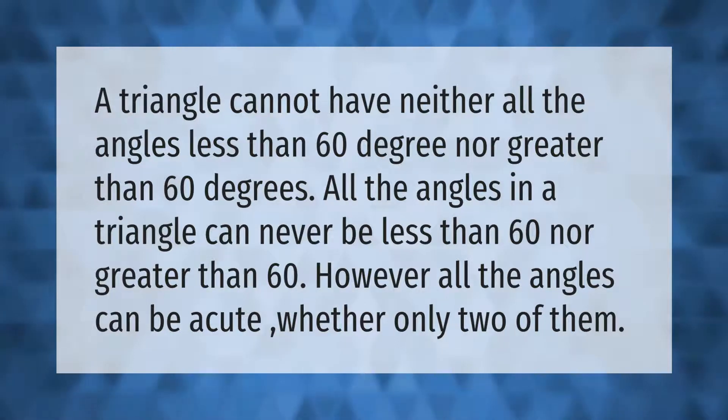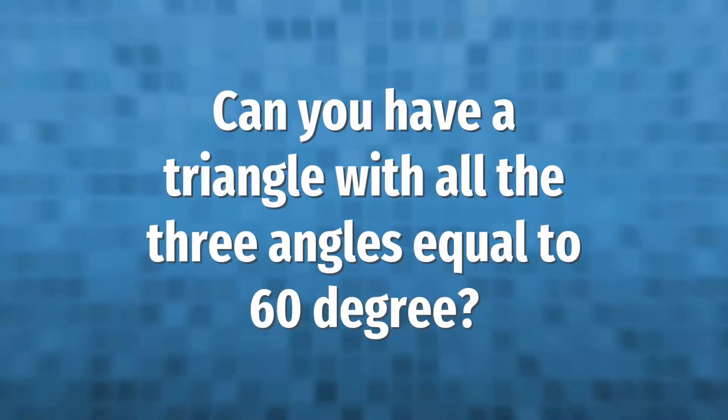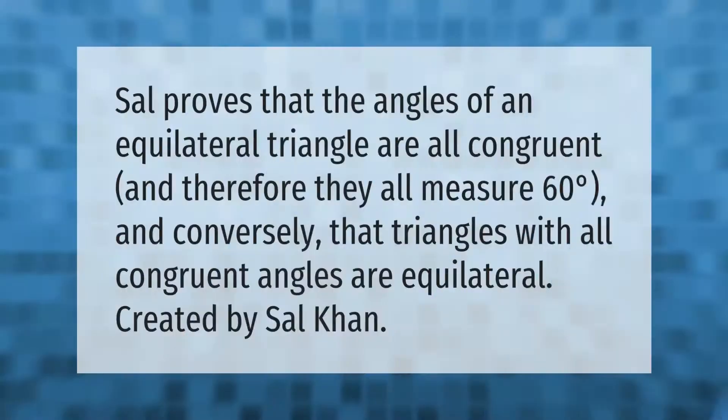However, all angles can be acute, or only two of them. Sal proves that the angles of an equilateral triangle are all congruent, and therefore they all measure 60 degrees, and conversely, that triangles with all congruent angles are equilateral. Created by Sal Khan.